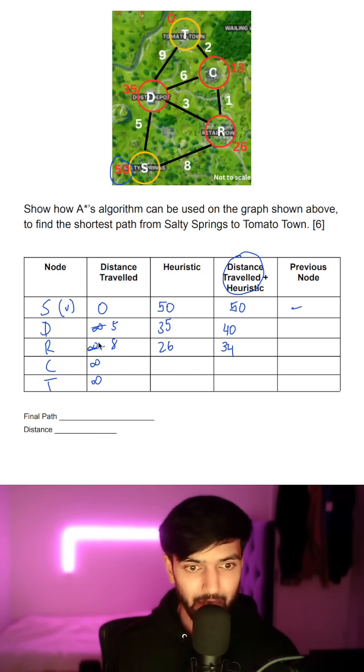We look at C which has a distance of 9. And the heuristic for C is 13. 13 plus 9 is 22. And we came from S-R.